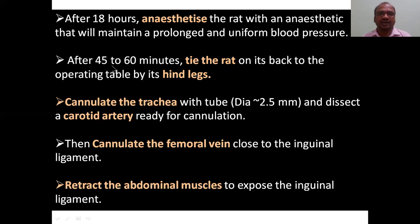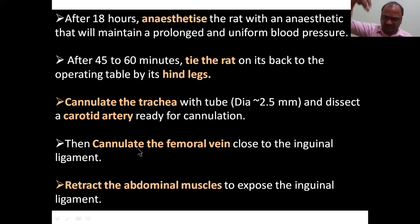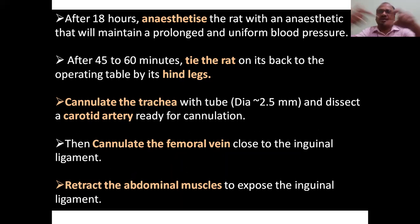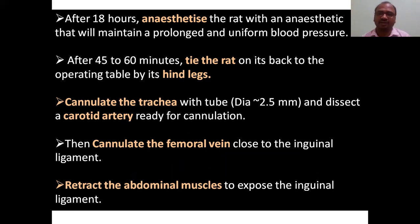After 45 minutes to one hour, tie the rat on its back on the operating table, securing the hind legs. Cannulate the trachea with a tube having a diameter of around 2.5 mm. Dissect the carotid artery and make it ready for cannulation. A cannula is a small tube-like structure with one projection that you insert into the artery or vein to give injections — similar to an IV infusion set cannula.